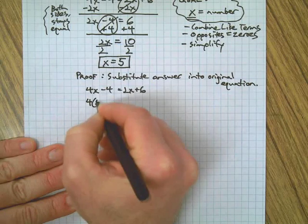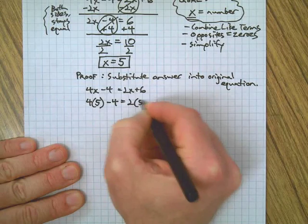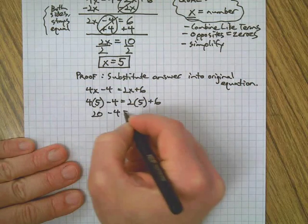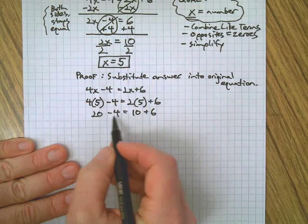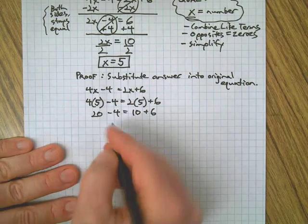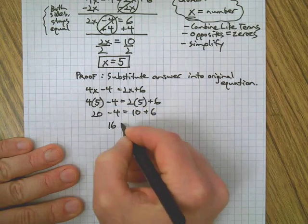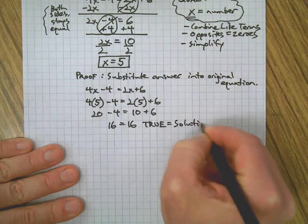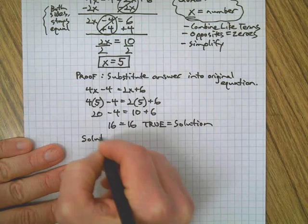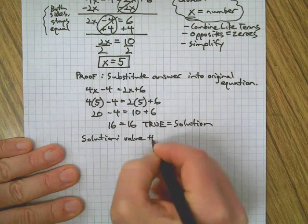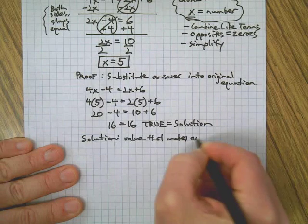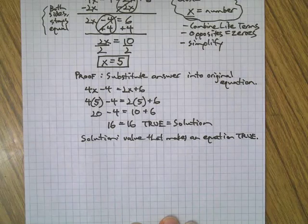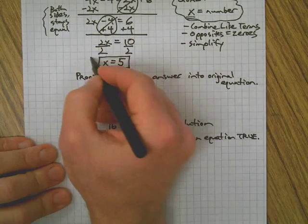4 times 5 minus 4 equals 2 times 5 plus 6. First we're going to get rid of the parentheses by multiplying. Then instead of two numbers, we want one, so we need to combine like terms. These terms are numbers which can be combined: 20 minus 4 is 16, 10 plus 6 is 16. This is true. As we talked about, true is the key word when we're defining a solution. Solution, just to review, that's the value that makes an equation true. In this case, 5 made this equation true, so it's the solution. So we'll put our little celebration around the five.